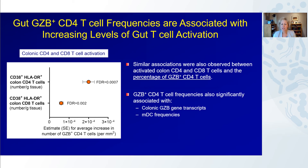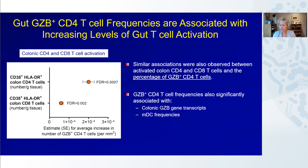Likewise, we saw significant associations between these granzyme B-expressing T cell frequencies and both colonic CD4 and CD8 T cell activation — looking at cells in the colon that co-expressed CD38 and HLA-DR, again significant by false discovery rate. The granzyme B CD4 T cell frequencies were also significantly associated with colonic granzyme B gene transcripts and mucosal myeloid dendritic cell frequencies, but otherwise there were no other significant associations.